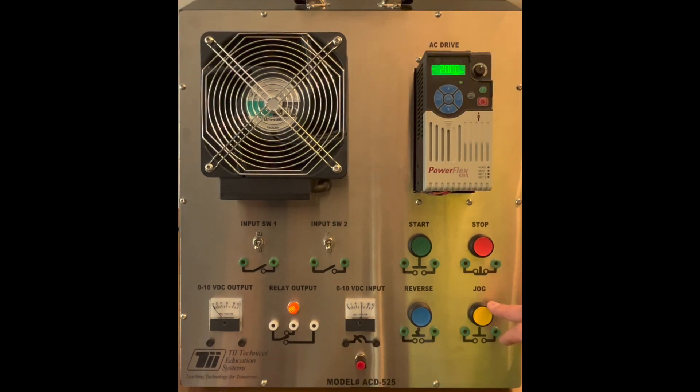Now when the jog button is activated we want it to ramp up to 20 hertz instead of 10 which is what it comes pre-programmed in the factory. So we'll enter this, we'll hit escape three times, now when I activate the jog button it will ramp up to 20 hertz instead of 10.